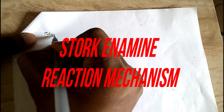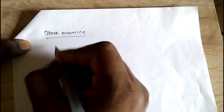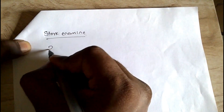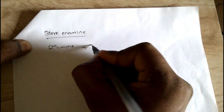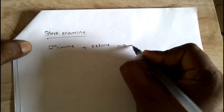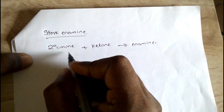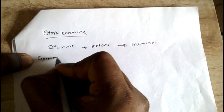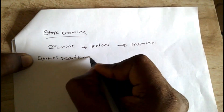Hey guys, today we are going to see a Stork enamine reaction. The secondary amine is treated with a ketone to give an enamine. So let's see the general reaction mechanism.